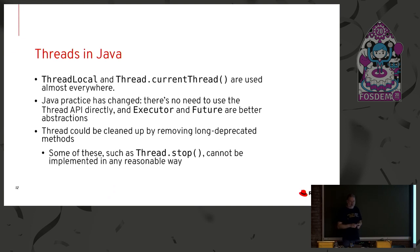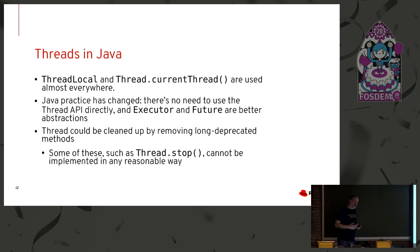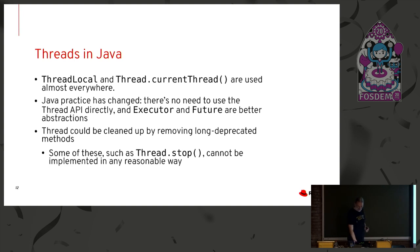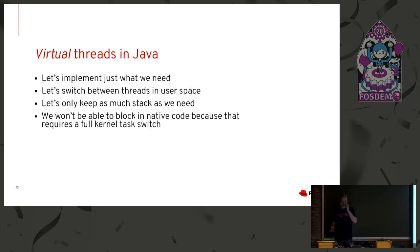Thread locals and Thread.currentThread() are used all over the place, so there are parts of the API that are no longer a match for this lightweight way of working. Thread could be cleaned up by removing long deprecated methods, but as we all know, it's extremely difficult to remove anything from Java. So we really need a better abstraction for all of this. And here we are: virtual threads.